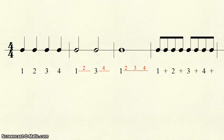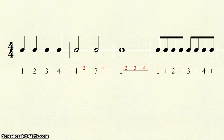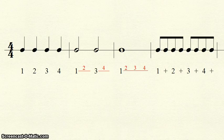To review: quarter notes get one beat and are written as individual numbers. Half notes get two beats and are written with the first beat, a line, and the second beat on the line. Whole notes get four beats and are written as the first beat, a line, and the second, third, and fourth beats on the line. Eighth notes get half of a beat, with the first eighth note written on the beat and the second half written as an "and." Thanks for watching.